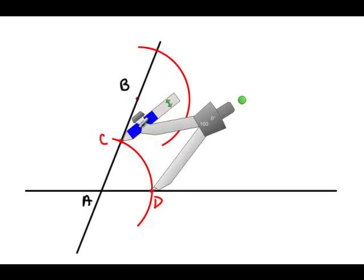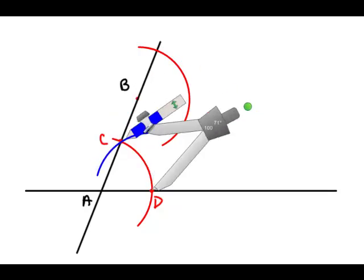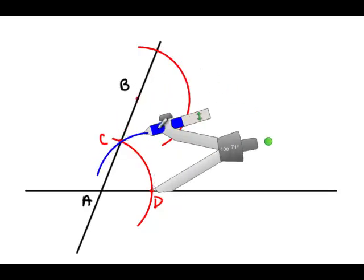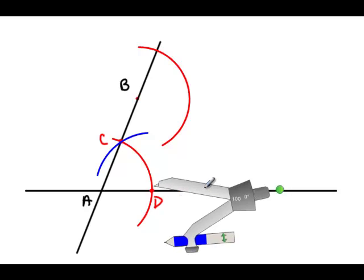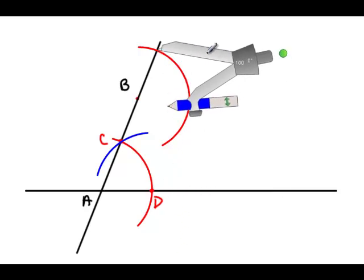Then measure the distance from C to D. And then what I'm going to do is I'm going to put my compass point on the intersection point of our arc up here, and using the same radius as the length C to D.